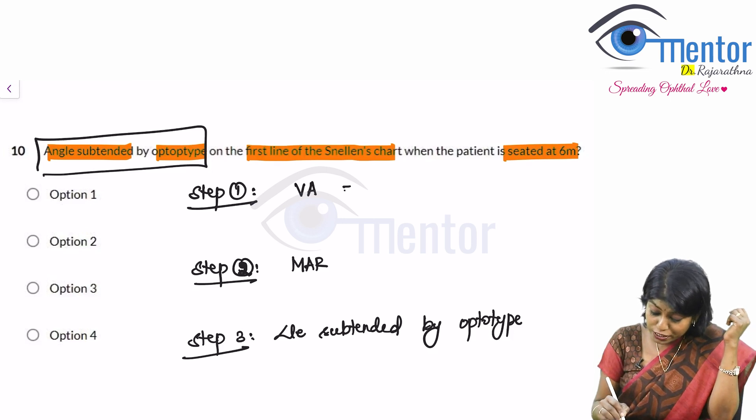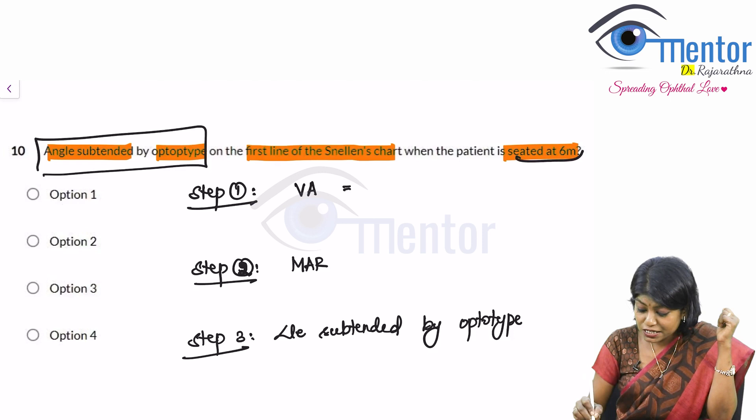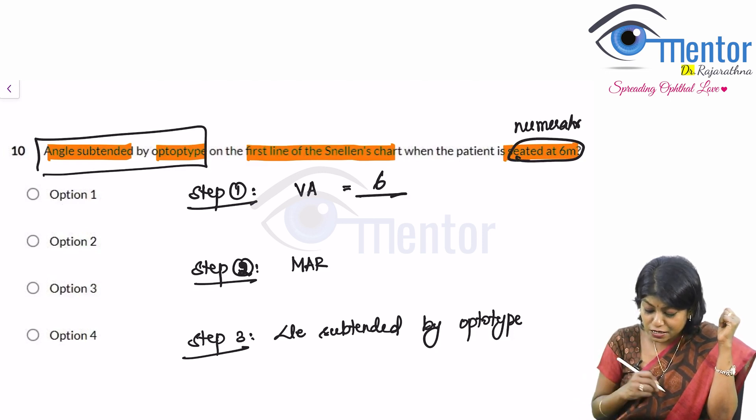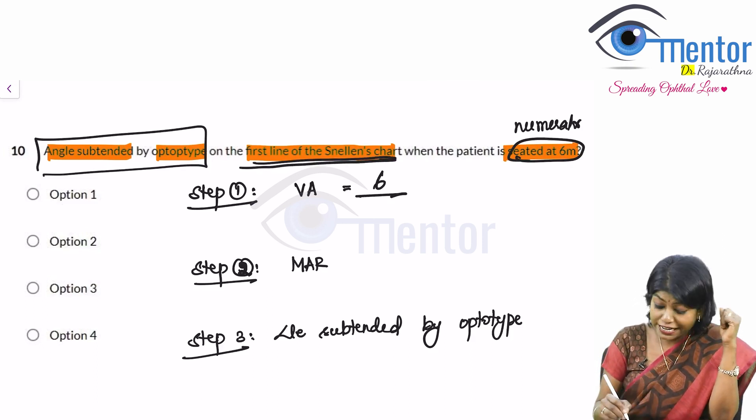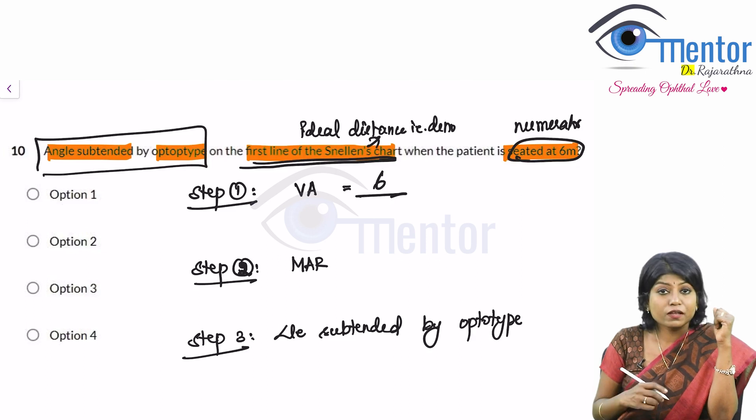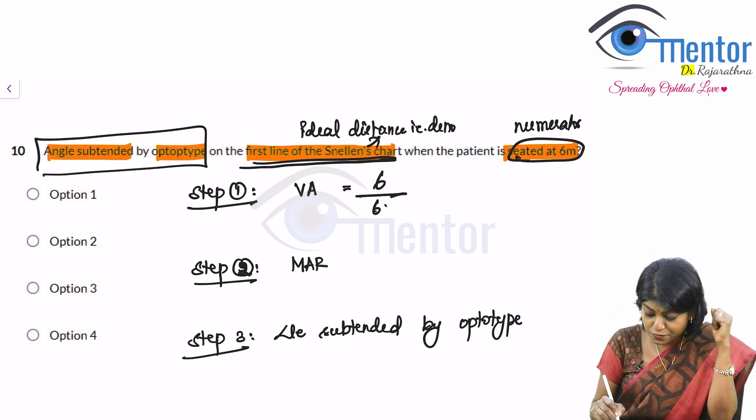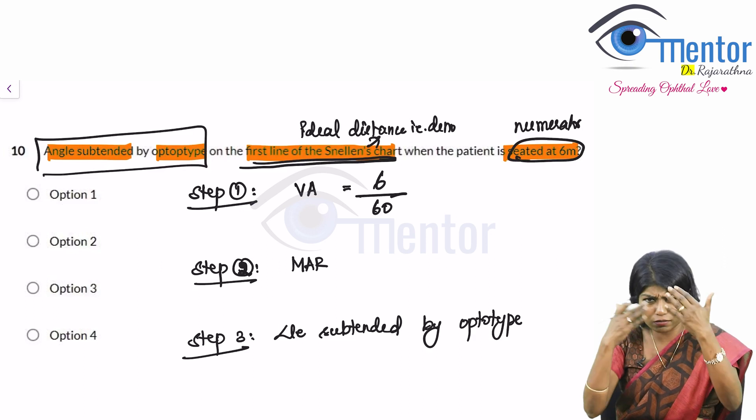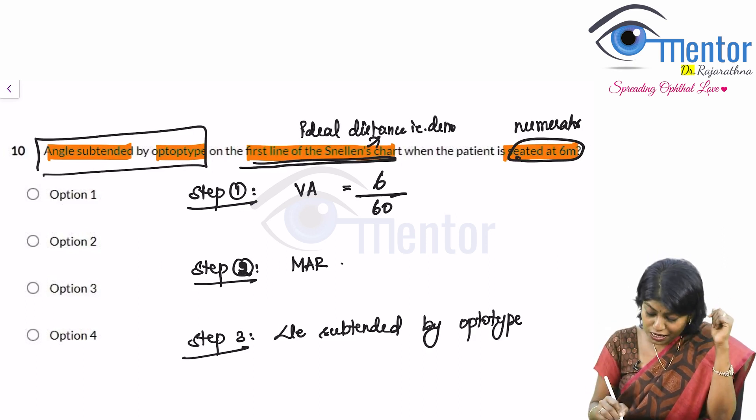So what is the visual acuity of my patient? What is the distance at which the patient is seated? 6 meter. So this is the numerator. 6. The first line of the Snellen Chart, what is the ideal distance? That is the denominator. First line I told you 60 meters, 6 by 60. You do not have to do the division now.